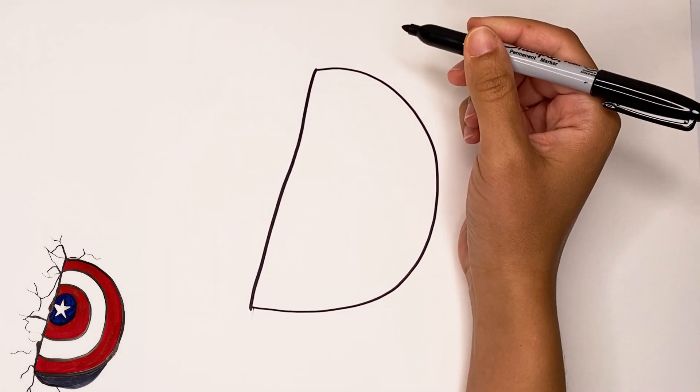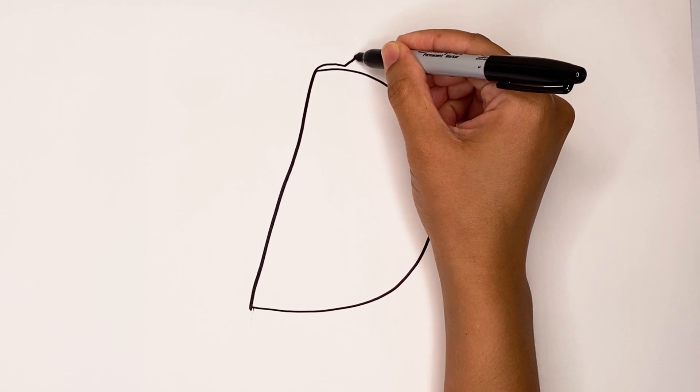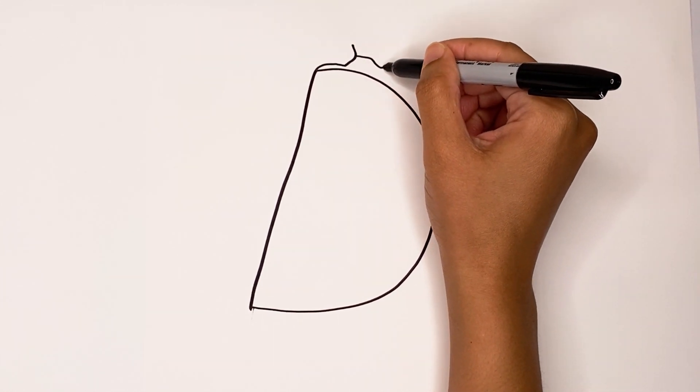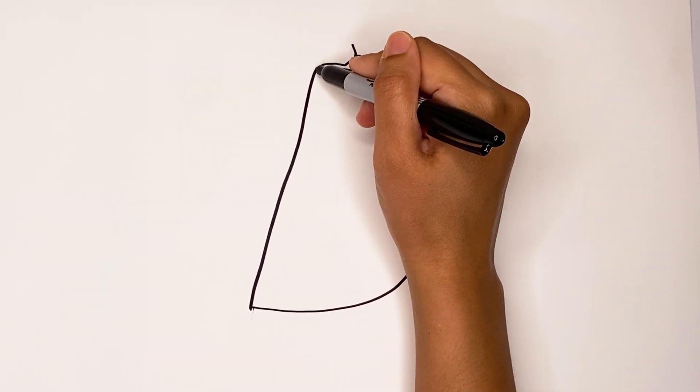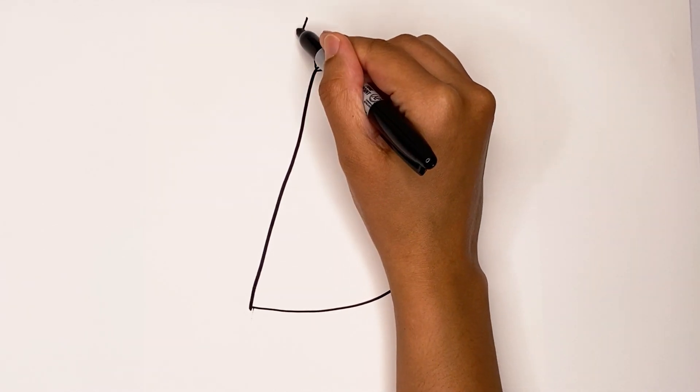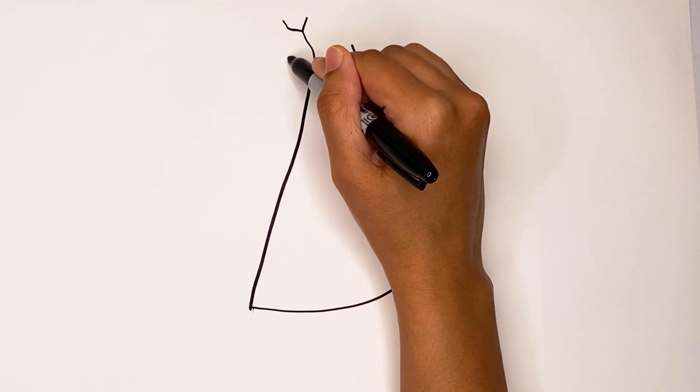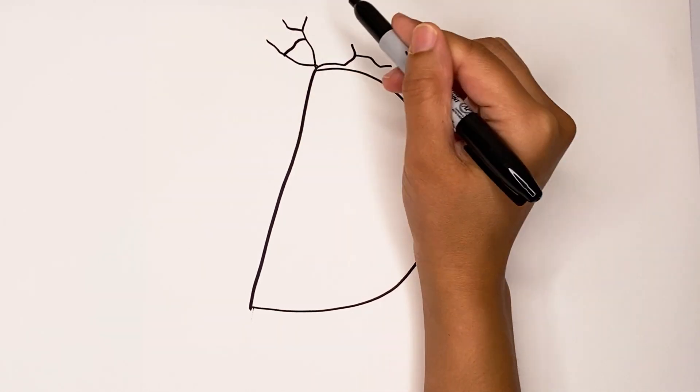So now that you have that, let's make little spikes going out like that. And if you notice they're kind of just jagged lines and it doesn't matter how you put these lines because these are the cracks and they're not perfect. So let's keep going out making these little cracks, put one right here between it.